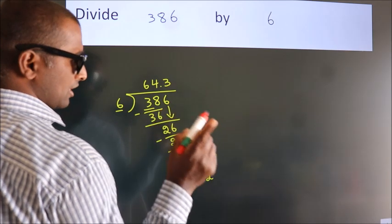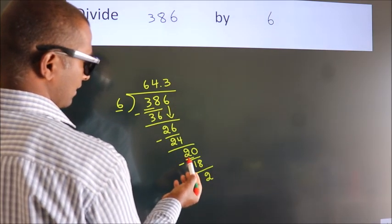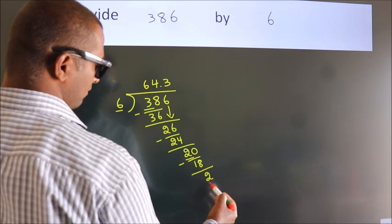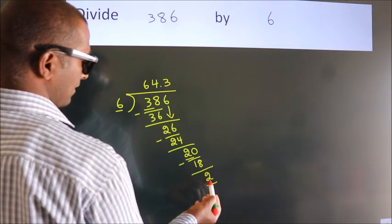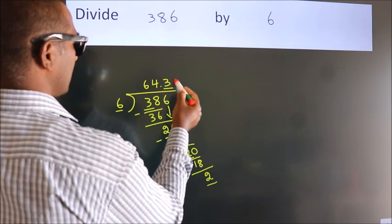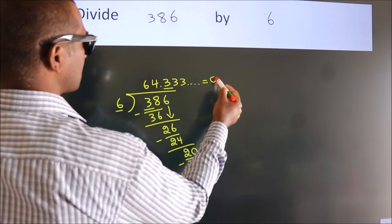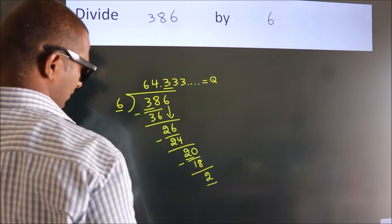Now you observe, we had 2 here and we got 2 again. That means this number keeps on repeating. So this is our quotient.